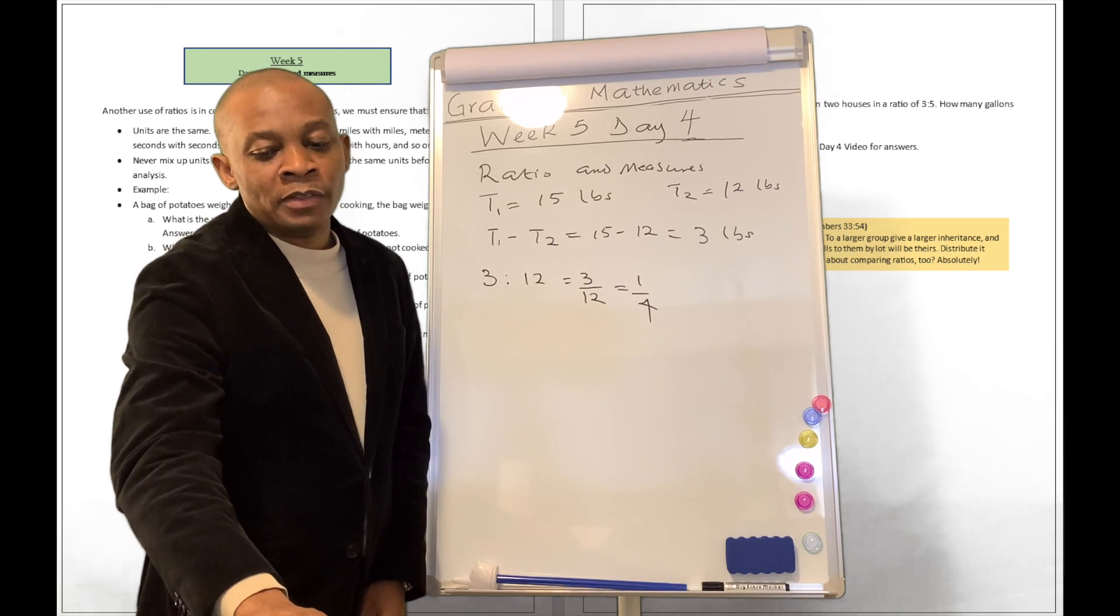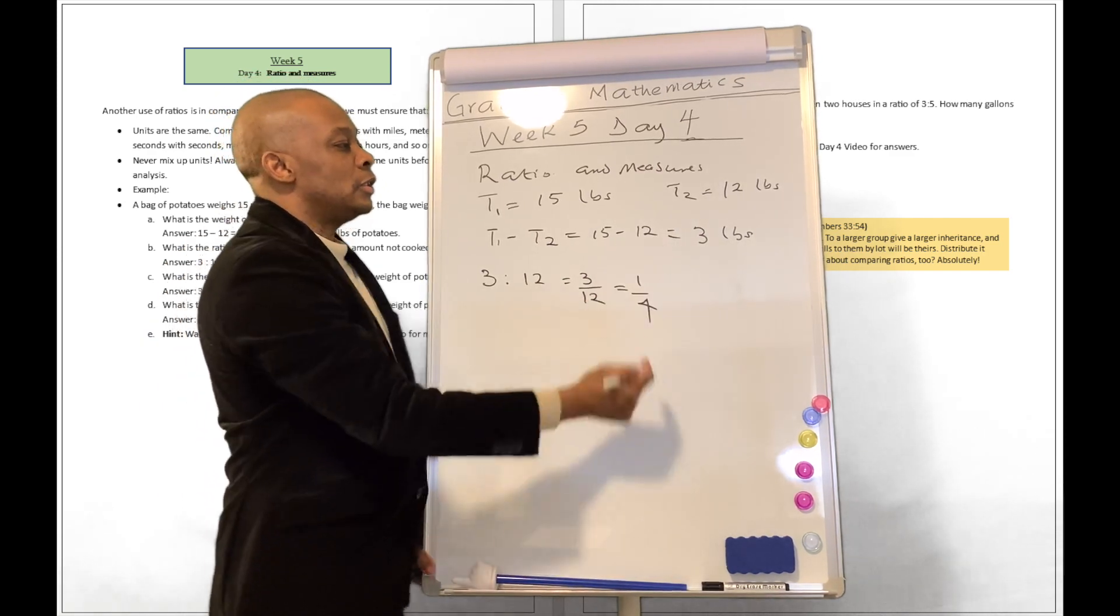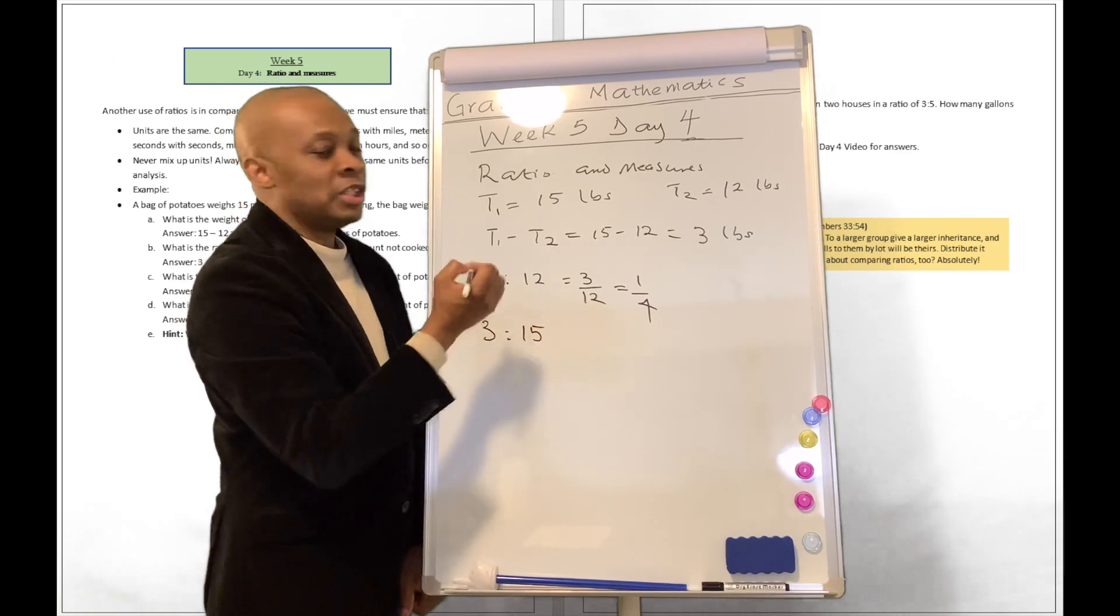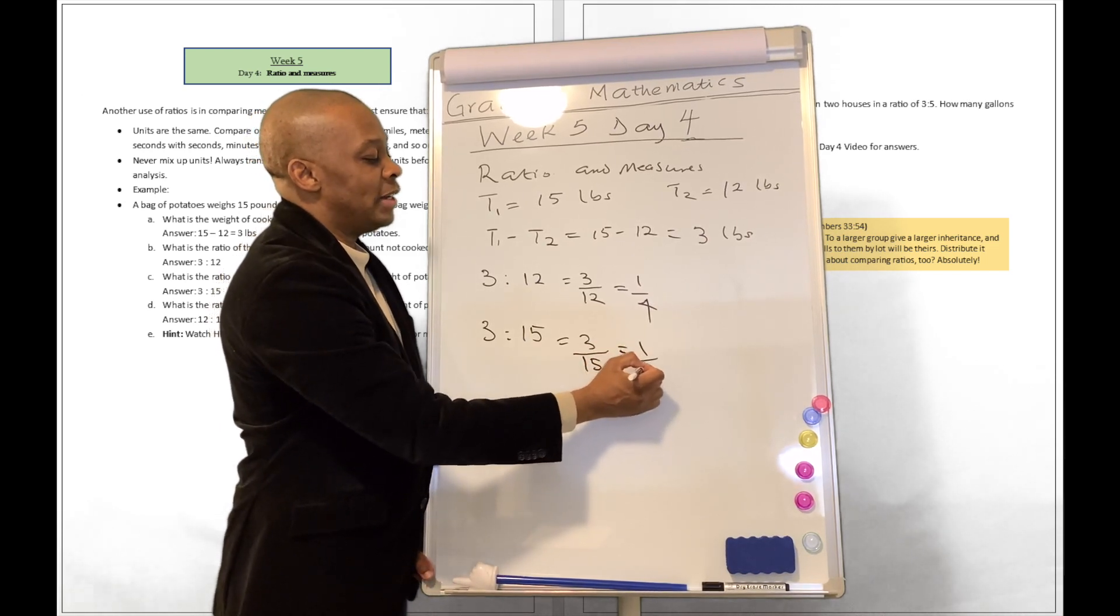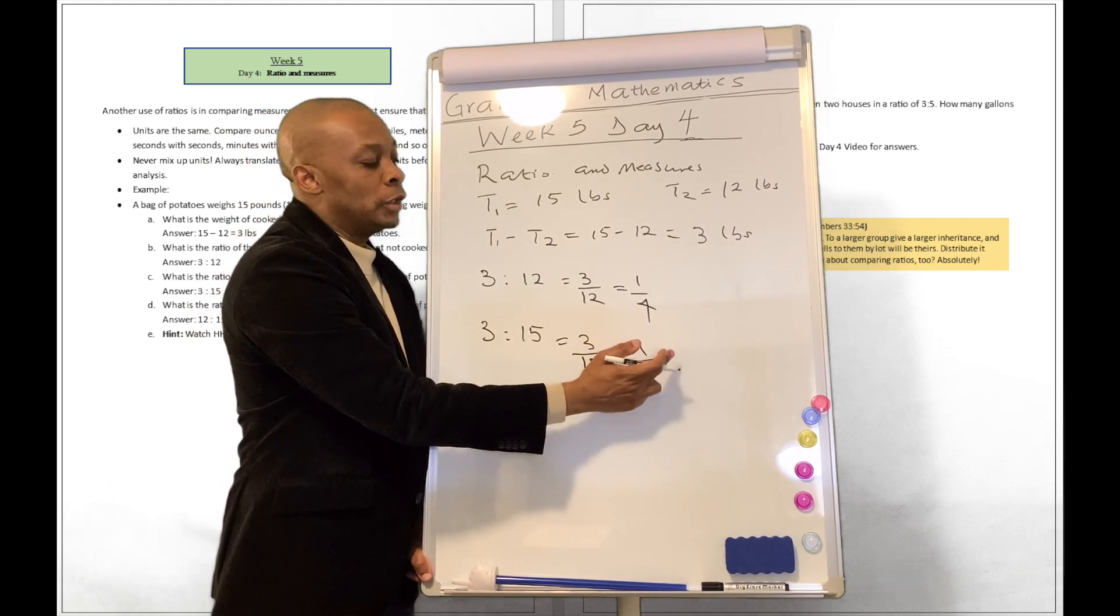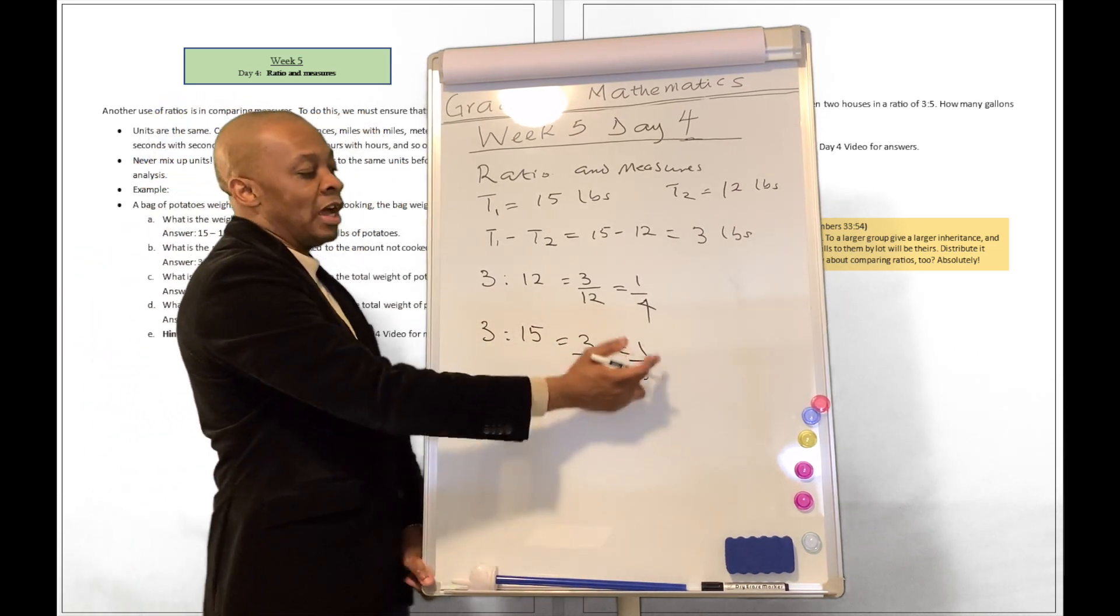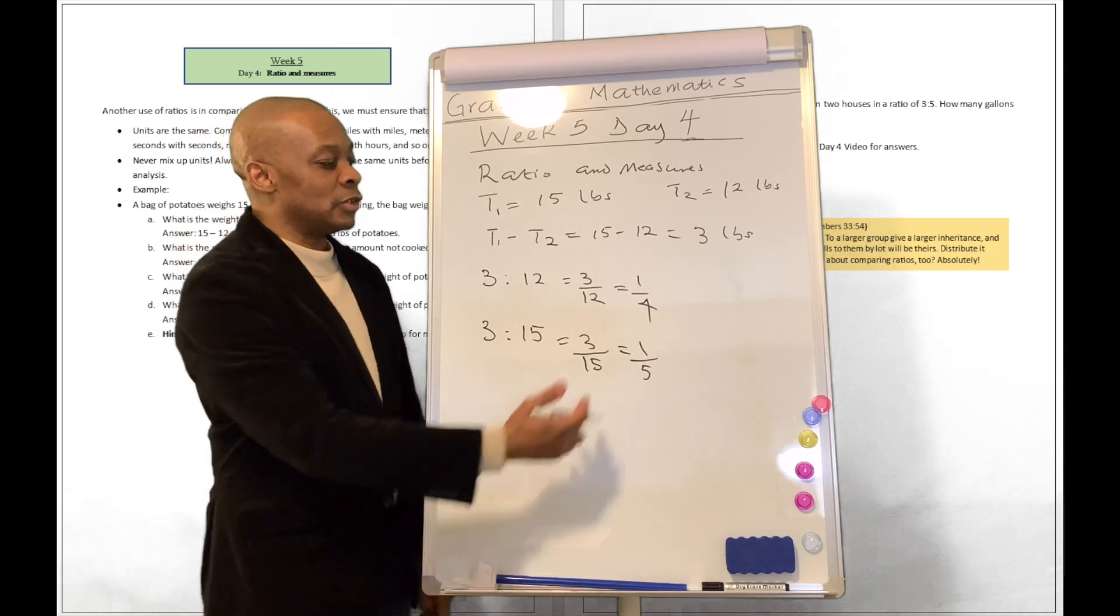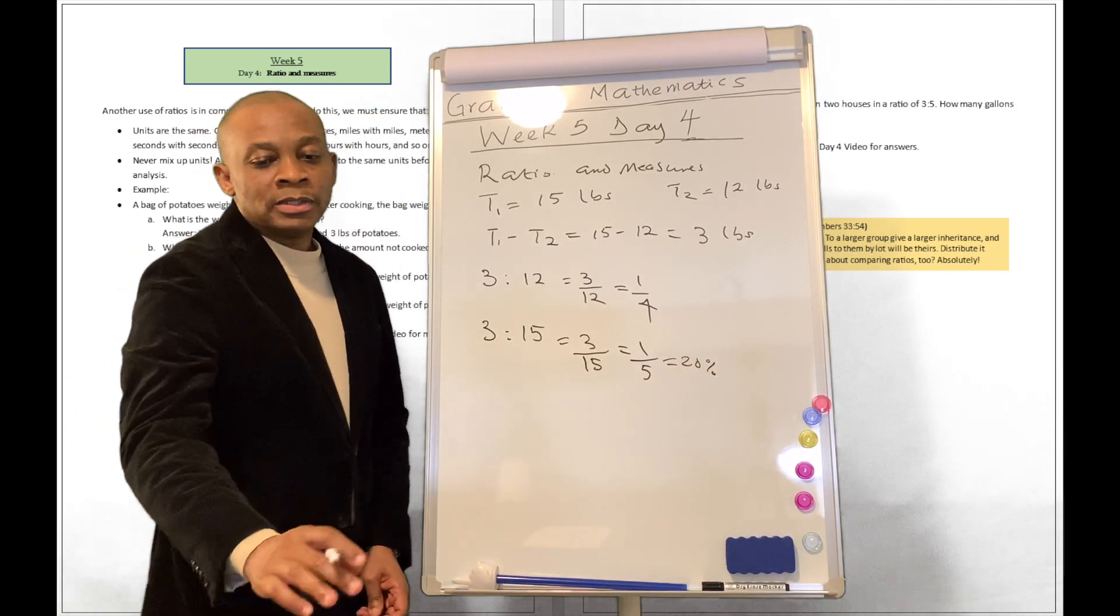What is the ratio of the amount cooked to the total weight of potatoes? This is the amount cooked, this is the original total weight. So the ratio is going to be 3 to 15, which is equivalent to 3 divided by 15 or 1 divided by 5. What's this telling us? For every one potato that we cook, there are still 5 in total. So we cooked about 20% of the potatoes.